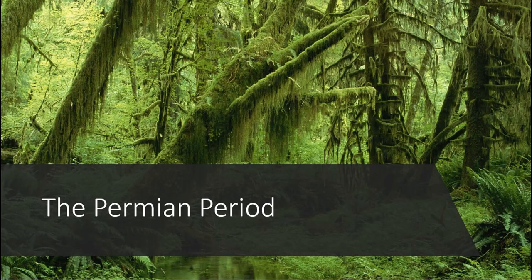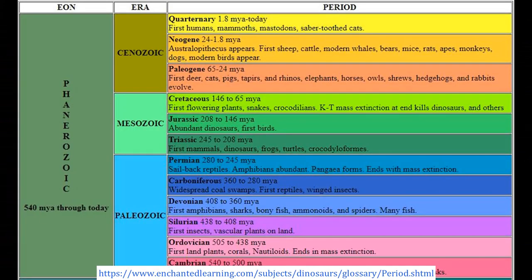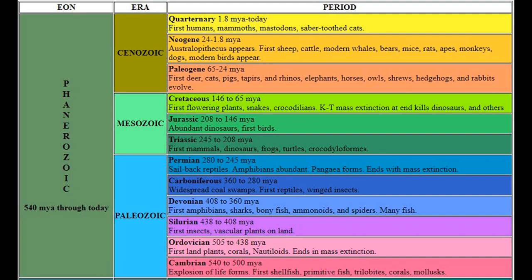The Permian period. First off, I'd like to examine what is meant by the term 'period.' The geological time scale is measured in rock layers, and a period on the geological time scale is a single rock system. Periods can be divided into two or more systems called epochs. Moving up the scale, two or more periods will compose an era, and two or more eras will make an aeon, which is the larger scale of time.